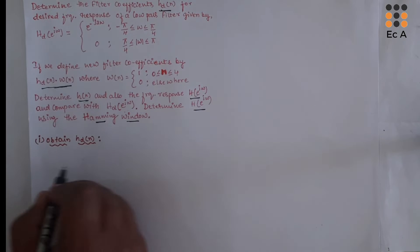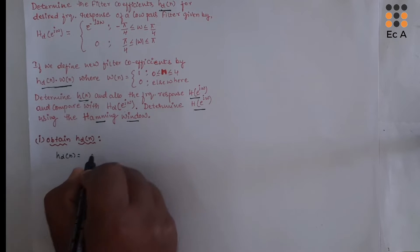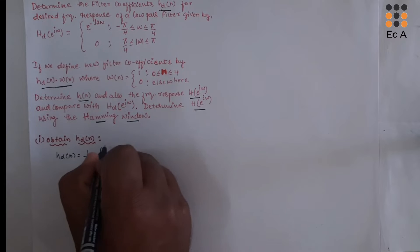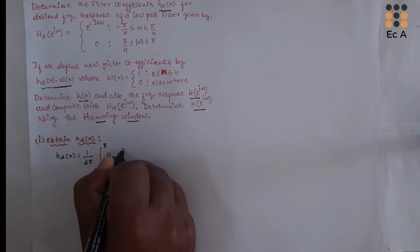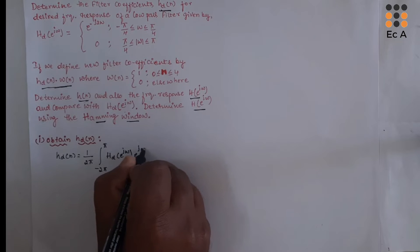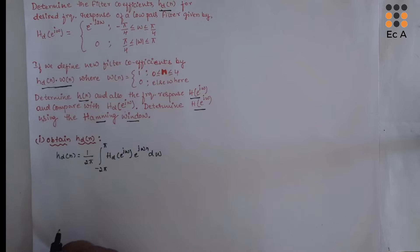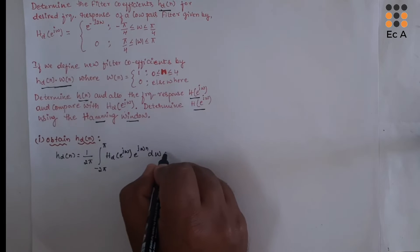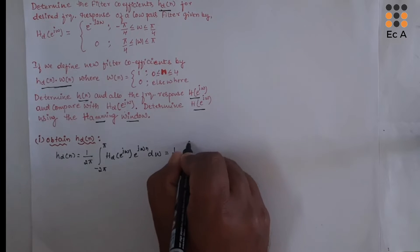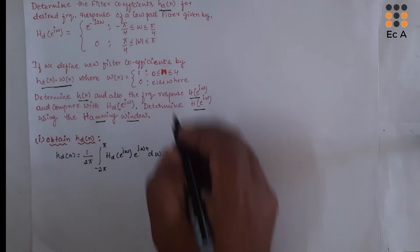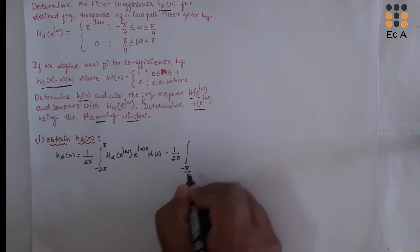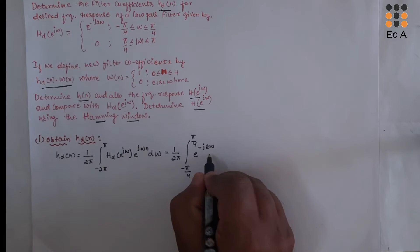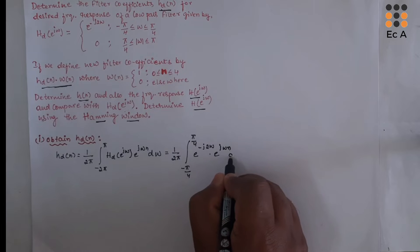First let us obtain HD of N. We know HD of N can be given as 1 by 2π, integration from minus π to π of HD of e^jω times e^jωN dω. Here HD of e^jω is given as e^(−j2ω) with limits from minus π/4 to π/4. Substituting those values, this equation becomes 1 by 2π integration from minus π/4 to π/4 of e^(−j2ω) times e^(jωN) dω.